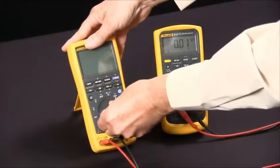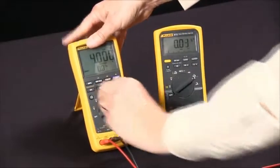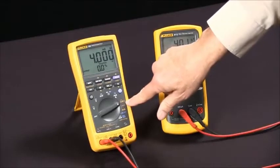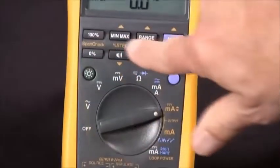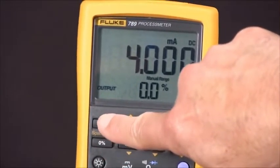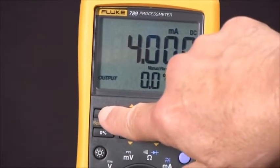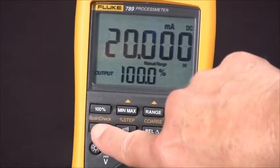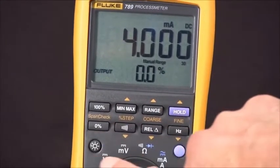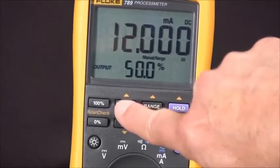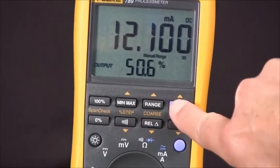We'll rotate the rotary knob to the DC milliamp position. From here we have several choices to control it. We can start with the span check and go from 0% of span to 20 milliamps or 100% of span or zero. Then with these three we can do 25% of span coarse or fine adjustments.